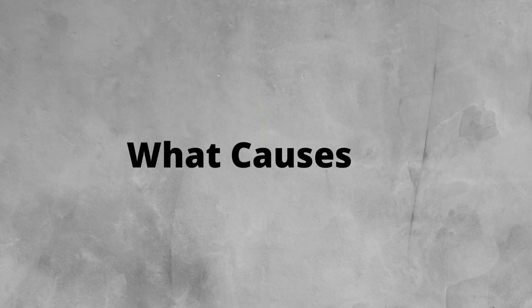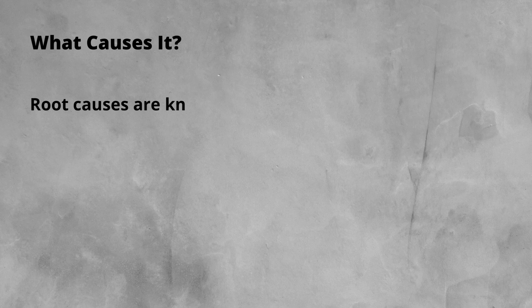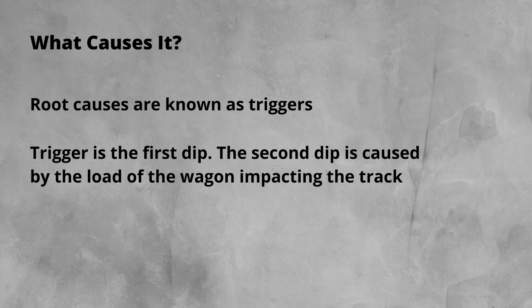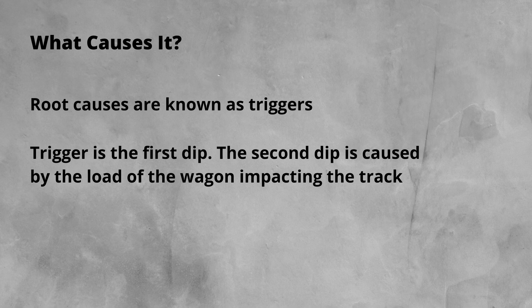So what causes it? The root cause of cyclic top is known as a trigger. This will be the first dip that causes a load and unload cycle, as we've already discussed. The area where the load of the train comes back down onto the track in a sudden manner is where the second dip will form.